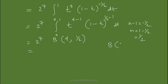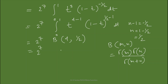Now we can apply the relation between the Beta and Gamma functions: Beta(m, n) = Gamma(m)·Gamma(n) / Gamma(m+n). So we will have Gamma(4)·Gamma(1/2) divided by Gamma(4 + 1/2).